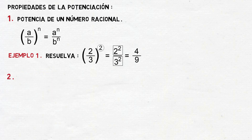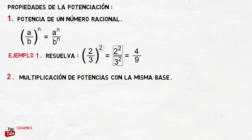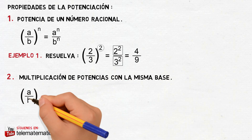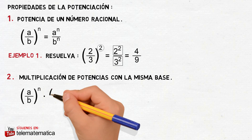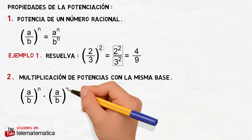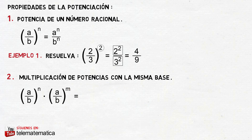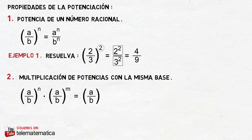Propiedad número 2: multiplicación de potencias con la misma base. Esta se define como A dividido para B elevado a la N, multiplicado para A dividido para B elevado a la M. Esto va a ser igual a conservar la base A dividido para B y sumar los exponentes.